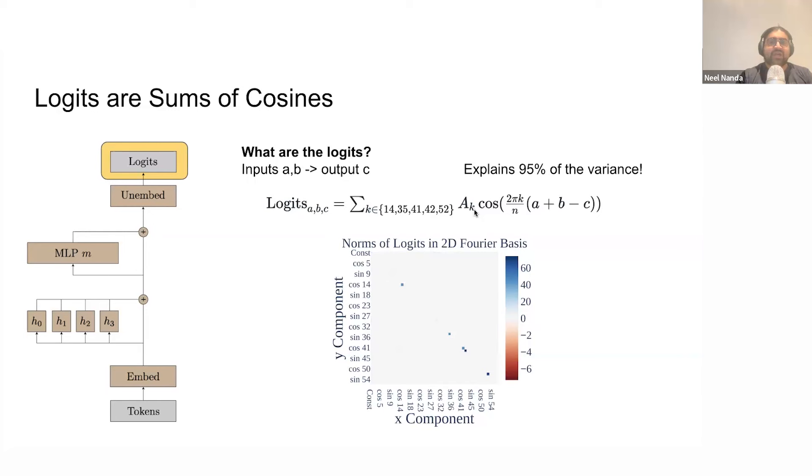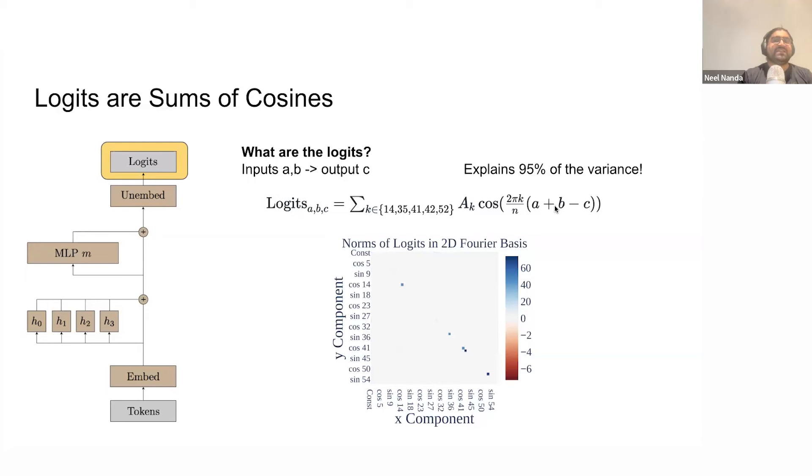And it turns out that the logits are really well approximated by a linear combination of terms that look like this. Cos of A plus B minus C times some frequency. Actually, the same frequencies that turned up here. Except one of them has vanished. For some reason, I never quite figured out. And this linear approximation explains 95% of the variance of the logits. Which, when flattened, are a 1.4 million dimensional vector. That can be really well explained by just a rank 5 linear approximation.